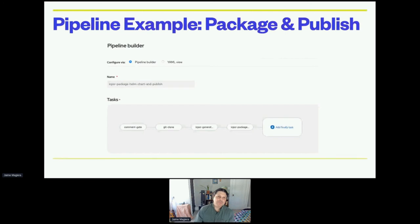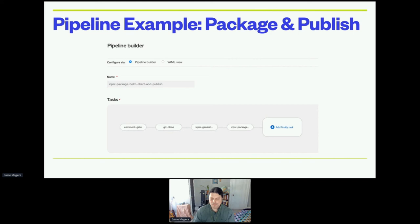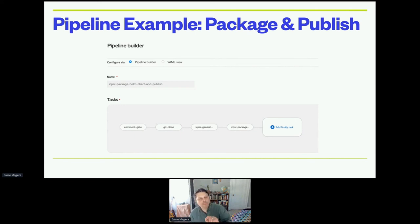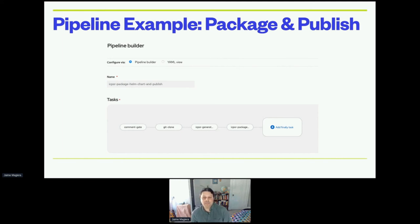Here's an example of a pipeline in our GitOps process. We have what's called a comment gate — I'm building a sort of bot infrastructure where, using a ChatOps model, commands can be issued from the Git repository to trigger the pipelines. I wrote the comment gate to filter comments; you can set what comment you want to look for and who it should come from, and that allows the rest of the pipeline to run. We've got a Git clone, generate a new Helm chart, then package and publish that package up to the registry.